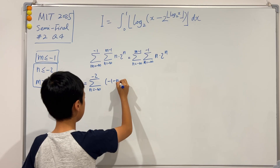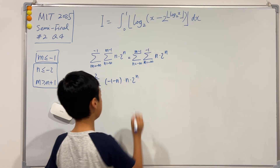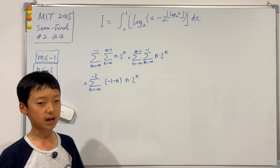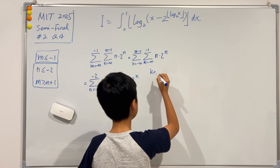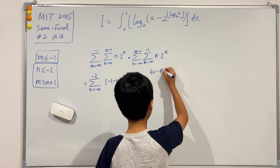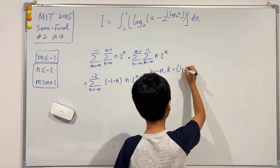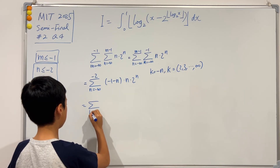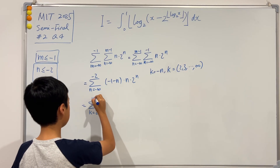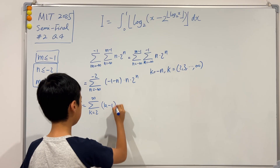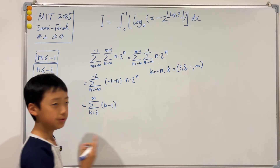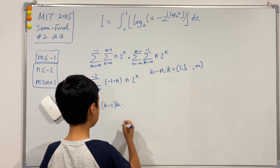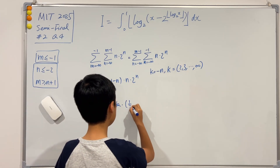We see so many negatives and we don't like negatives, so to make things easier I'll let k equal negative n. So k goes from 2, 3, all the way to infinity, and the sum becomes the sum from k equals 2 to infinity of k minus 1, times negative k, times 2^(−k) — we can take the negative outside — so times k, times (1/2)^k.